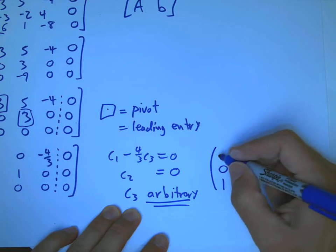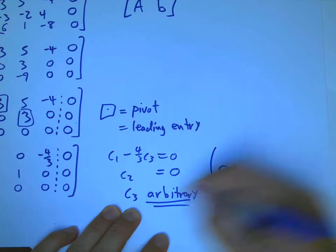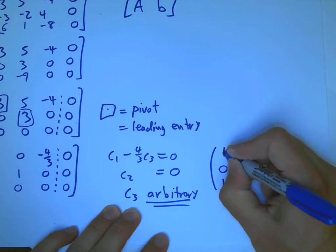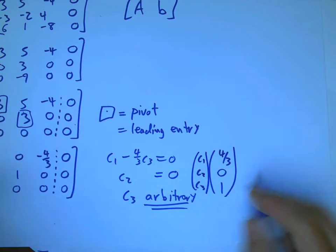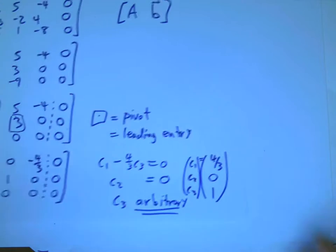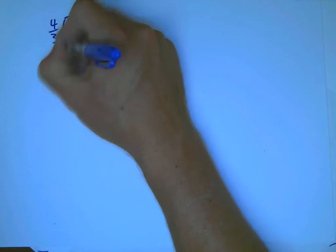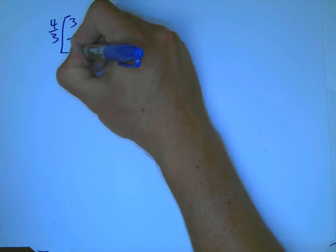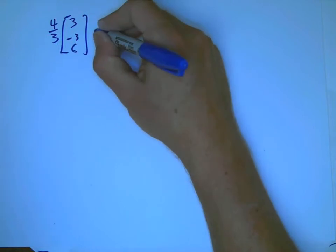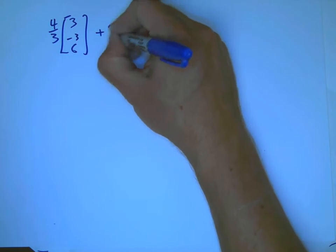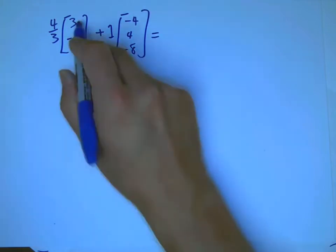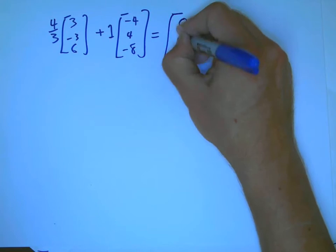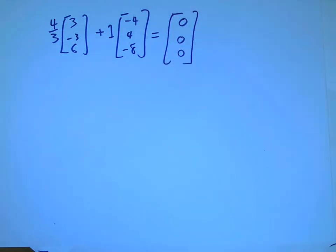For example, I could just plug in C3 equals one. C2 now does have to be zero. And C3 is one, and so C1 is four thirds. So that's C1, C2, C3. So what does that mean? And back to our original vectors, it means that if I take four thirds times the first vector, plus just one times the third vector, we can verify, oh yeah, that is zero. Four thirds times three is four. Four thirds times minus three plus four, and four thirds times six is eight. And I do get the zero vector.